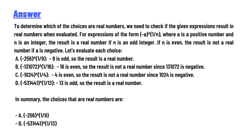Evaluating each choice: A) (-256)^(1/9) — nine is odd, so the result is a real number. B) (-131072)^(1/16) — sixteen is even, so the result is not a real number, since 131072 is negative.